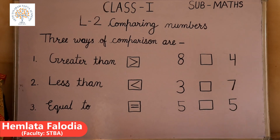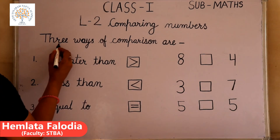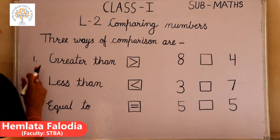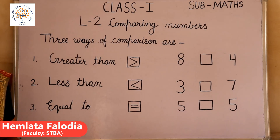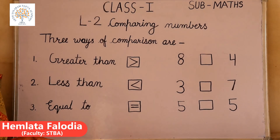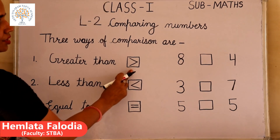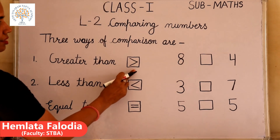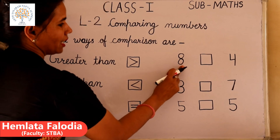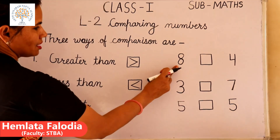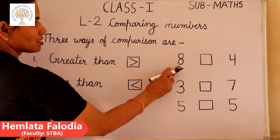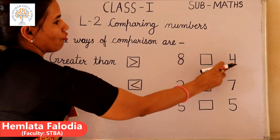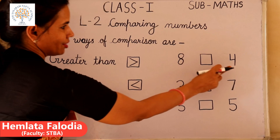There are three ways of comparison. Number one is greater than. Greater than means great — if the number is great in value, it means this is greater than the other. This is the sign of greater than. Suppose we are comparing eight and four. If the first number is bigger than the other number, it means eight is greater than four.